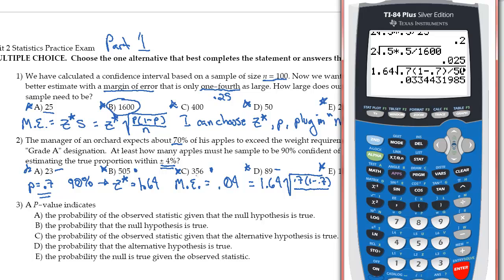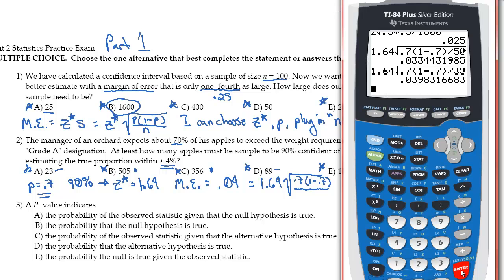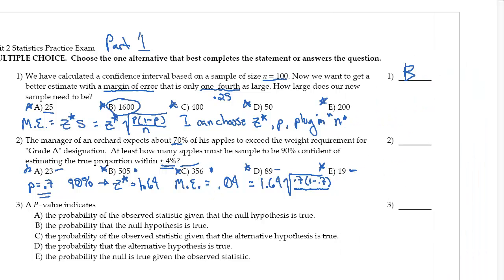So what about the 356 then? So let's take 1.64, multiply that by the square root of 0.7 times 1 minus 0.7 all divided by 356, and hit enter. Well, holy crap, look. That rounds to 4 right there. And so that, my friends, is our answer.